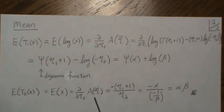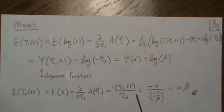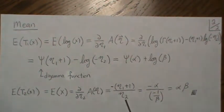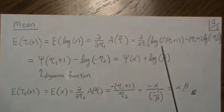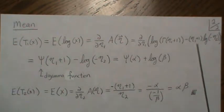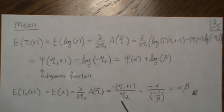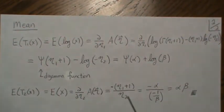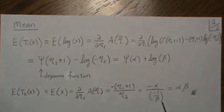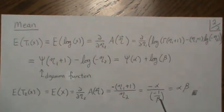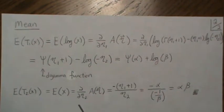To find the mean of our second sufficient statistic, which is x, we take the partial derivative of the log partition with respect to eta-two. The first piece has no eta-two so it's constant, and the eta-one plus one term is also constant; we're just taking the derivative of log of negative eta-two, which gives us negative one over eta-two. Plugging in what we know for eta-one and eta-two, we get negative alpha over negative one over beta. The negatives cancel and multiplying gives alpha times beta, which is indeed the known mean of a gamma distribution.